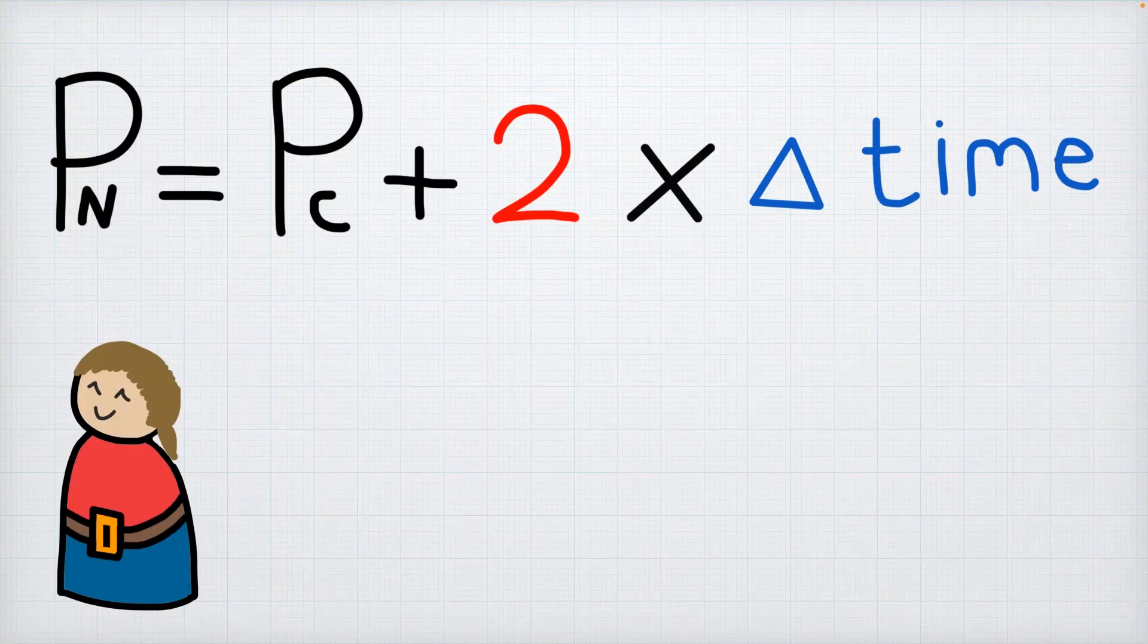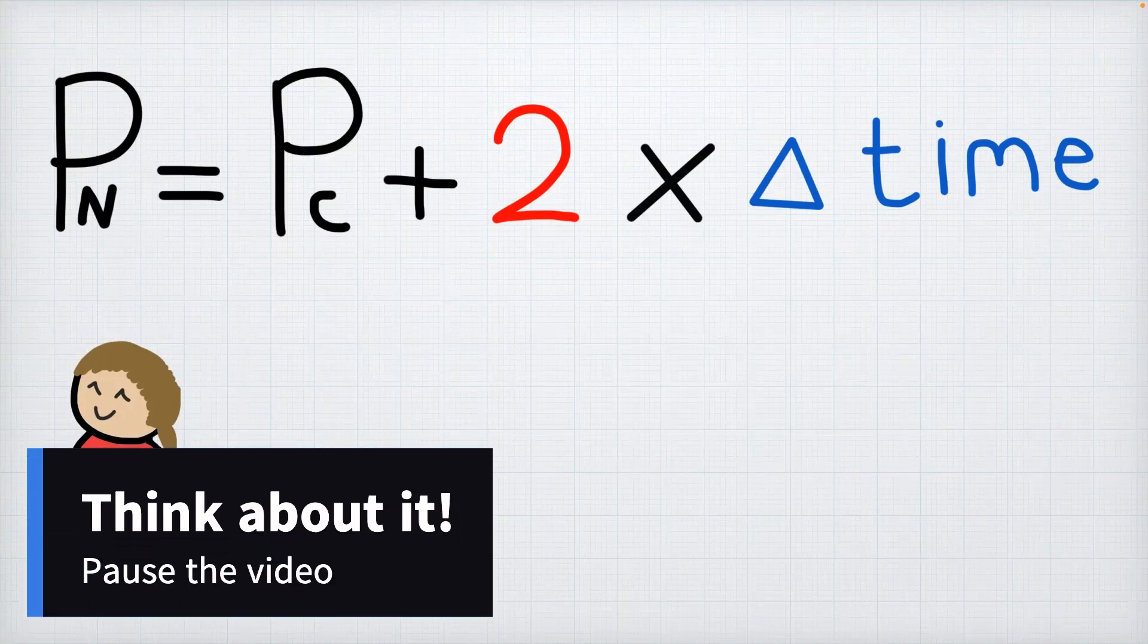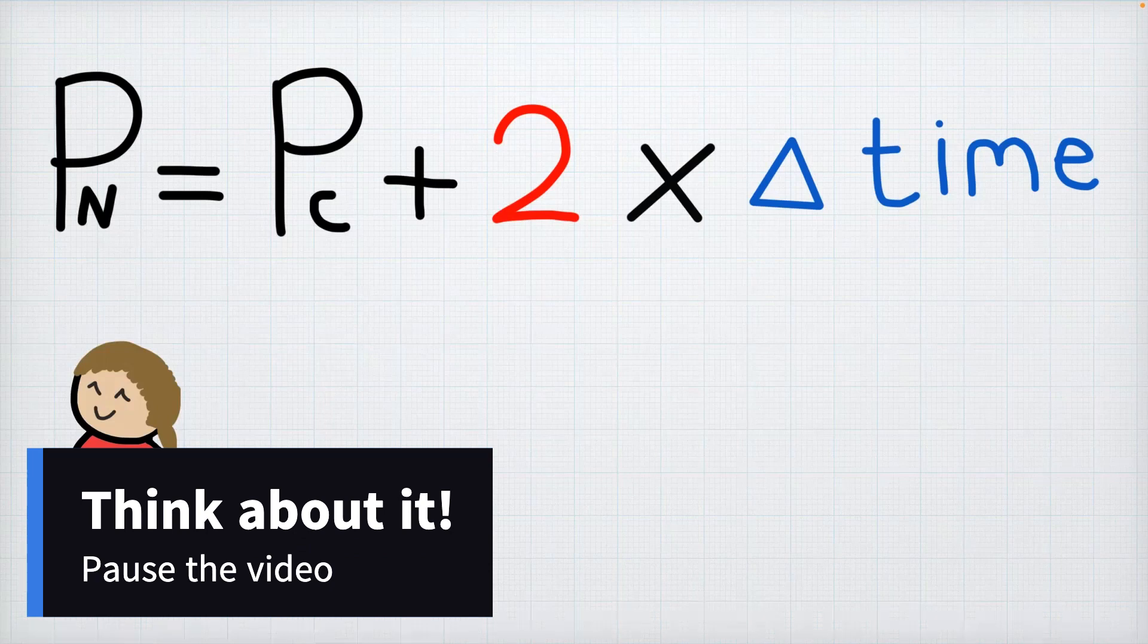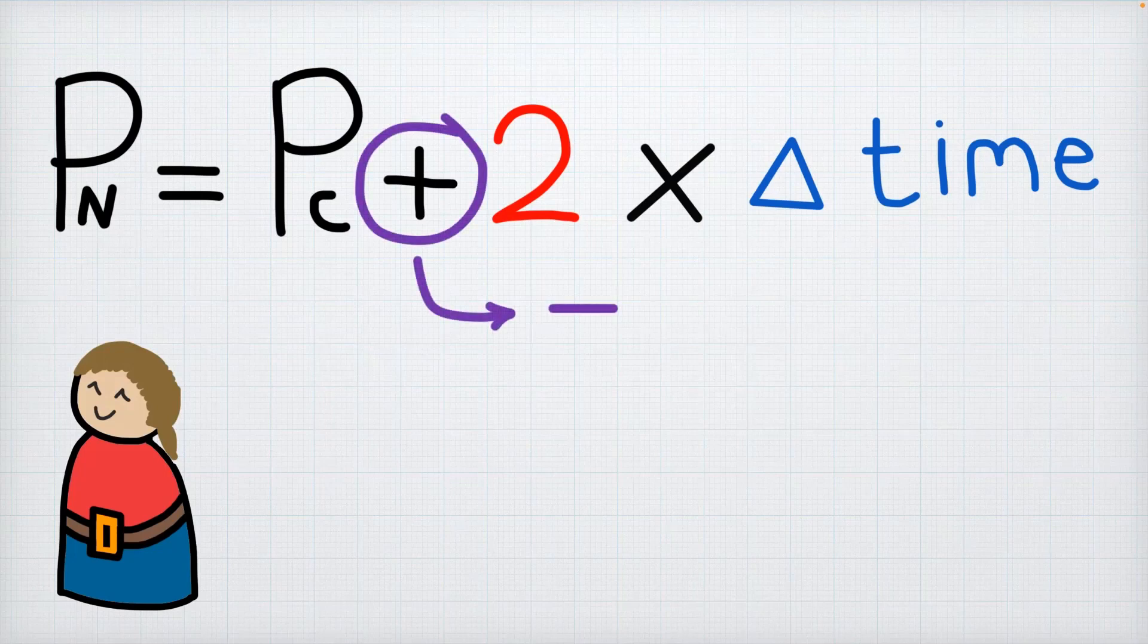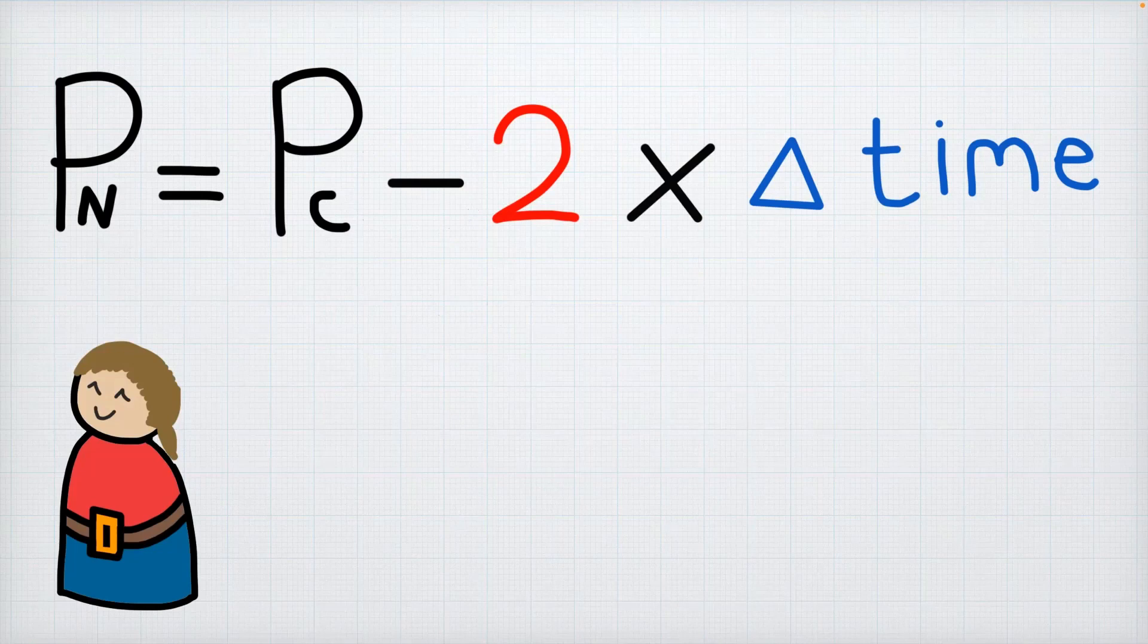But what if we want him to move to the left? Take a moment to pause the video and see if you can figure out how you can change this equation to make Tom move left instead of right. So if you paused the video and took a second to look at the equation you've probably figured out that you can change this addition sign to a subtraction sign to get him to move to the left. This addition sign or subtraction sign is considered to be the sign of our speed and changing the sign of our speed works great if all we want to do is move our character to the left and to the right.